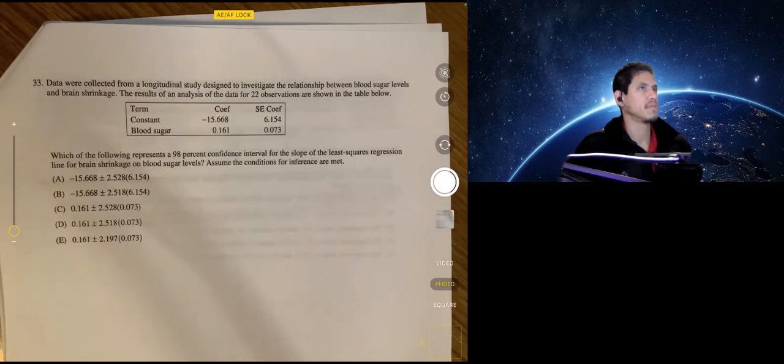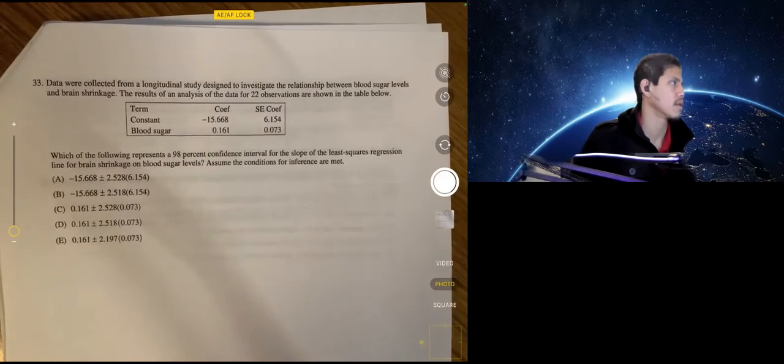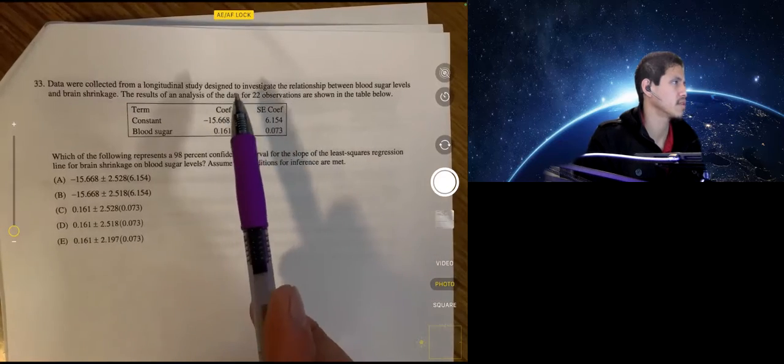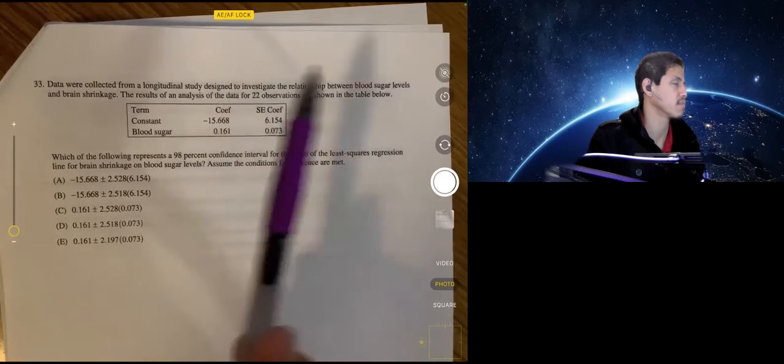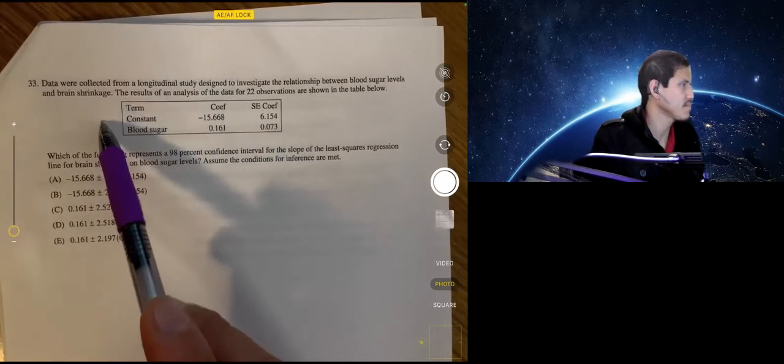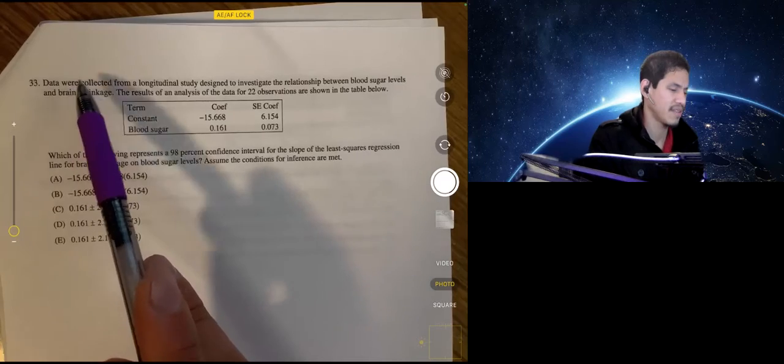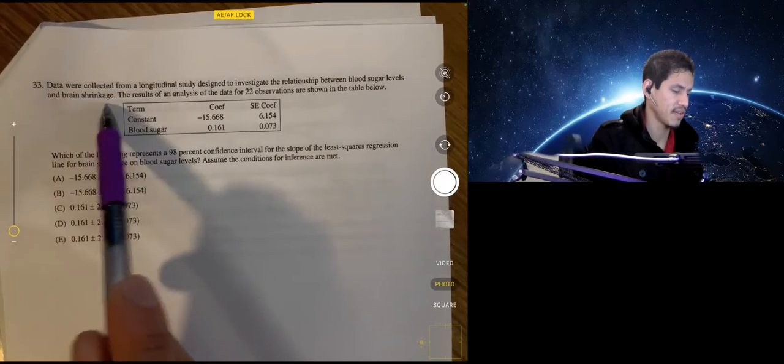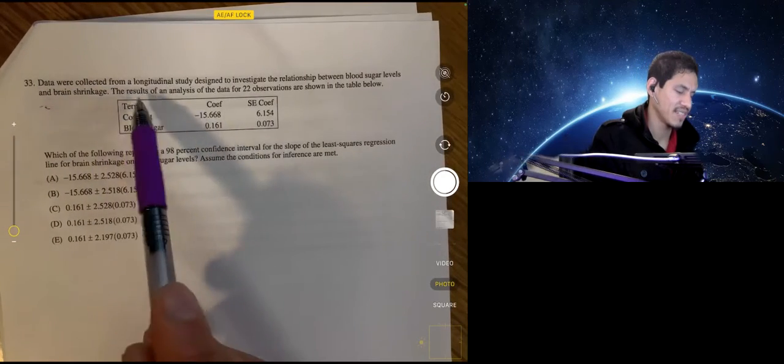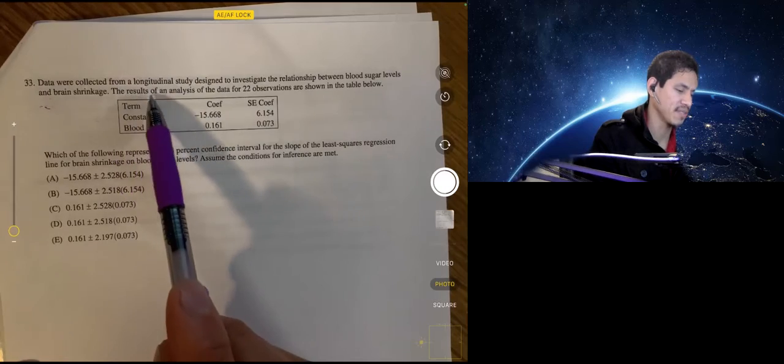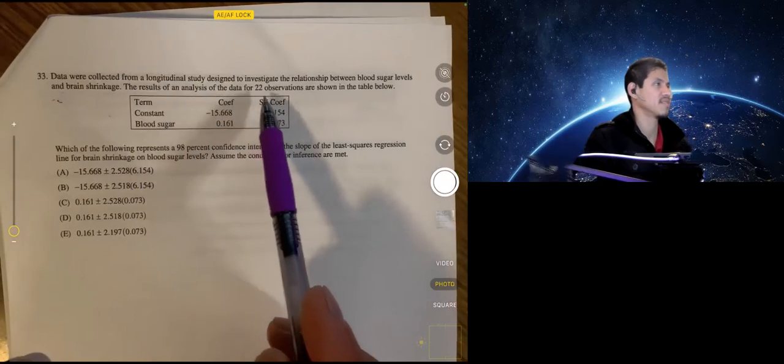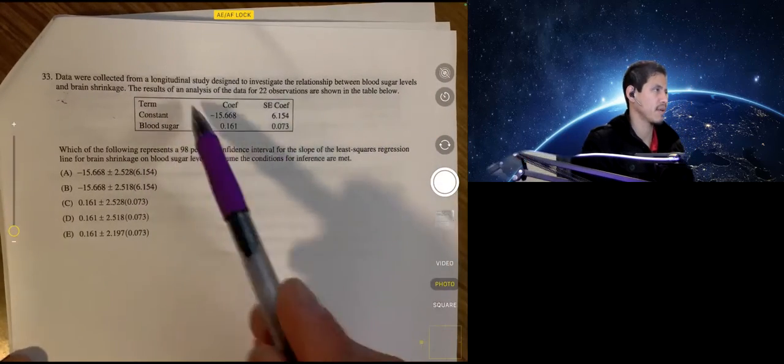All right, 33. Data were collected from a longitudinal study designed to investigate the relationship between blood sugar levels and brain shrinkage. So brain shrinkage, sound good. Anyways, based on the results of the analysis, the data for 22 observations are shown in the detail below. So here's our computer output.